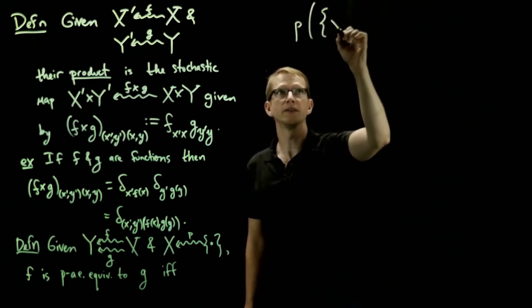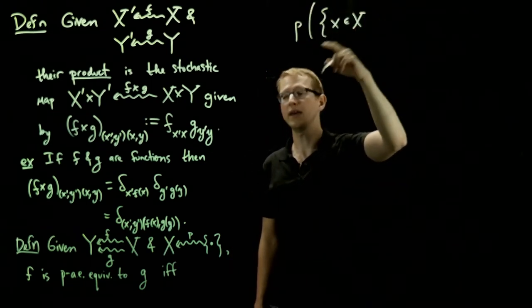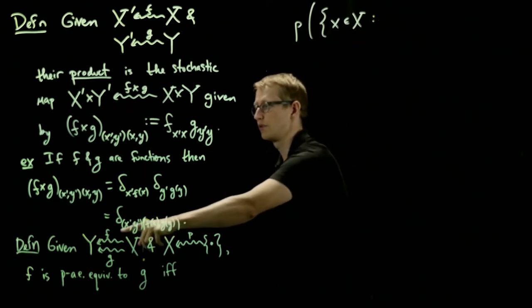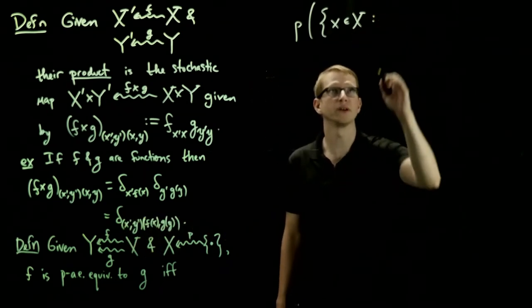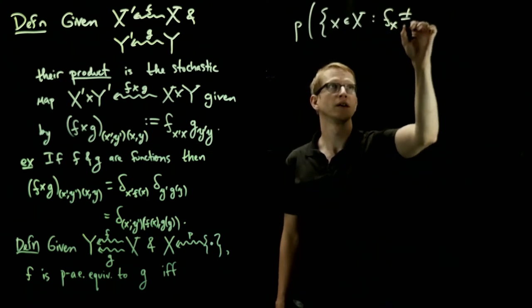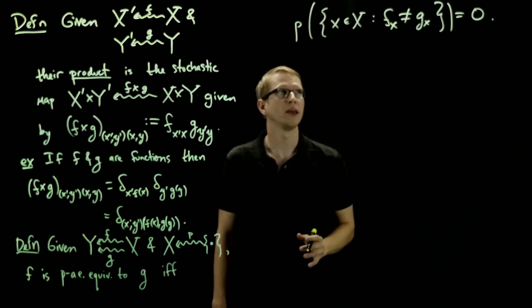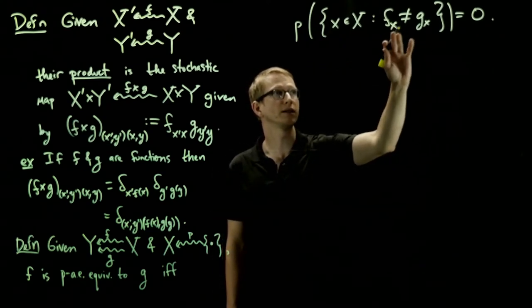And the way we define equivalence is that these stochastic maps agree everywhere outside a set of measure zero. So outside of events that have probability zero. So the way we write that is if and only if the probability of the set of points on the domains of these corresponding stochastic maps, where these two stochastic maps differ, is equal to zero.